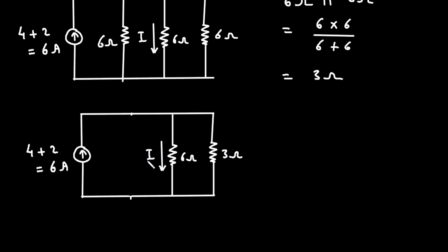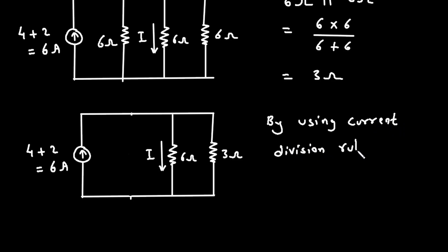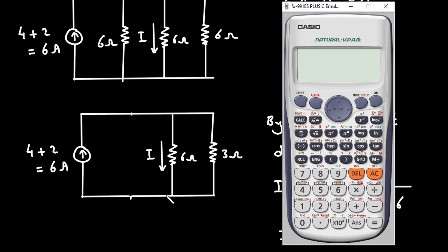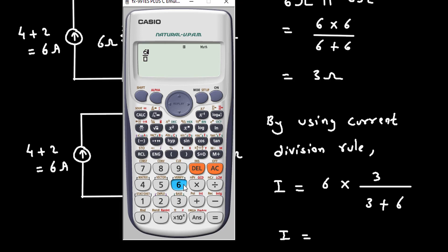Now we can easily find the value of this current I by using the current division rule. According to the current division rule, current I is equal to 6 ampere multiplied by the opposite branch resistance of 3 ohm, divided by 3 plus 6. Solving this: 6 multiplied by 3 upon 9 gives 2 ampere. Therefore, the value of current I is equal to 2 ampere.